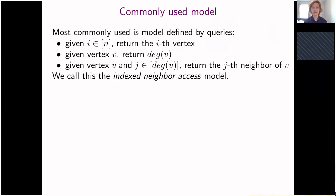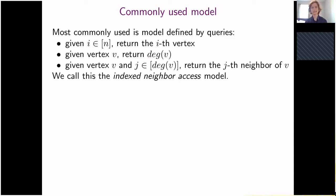A commonly used model in previous literature on sublinear time algorithms is the following. Intuitively, we have a graph with vertices, and for a given vertex we may query its degree, and for a given vertex and index j we can get the j-th neighbor of the vertex. We call this the index neighbor access model. In some papers it has been called the adjacency list model, but we decided against that name since a standard adjacency list — described as a linked list per vertex — cannot implement the indexed neighbor query.